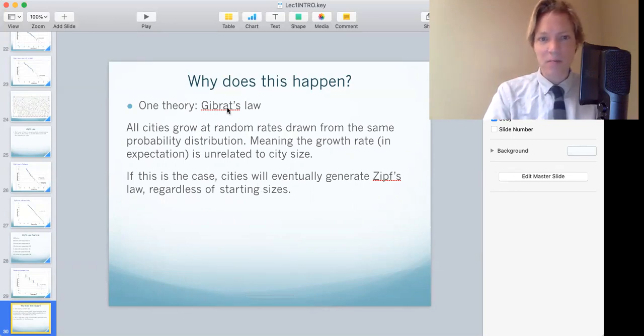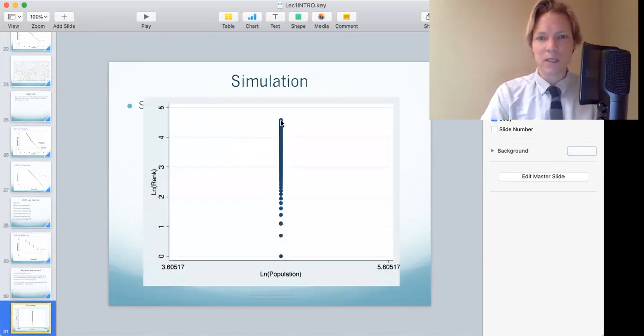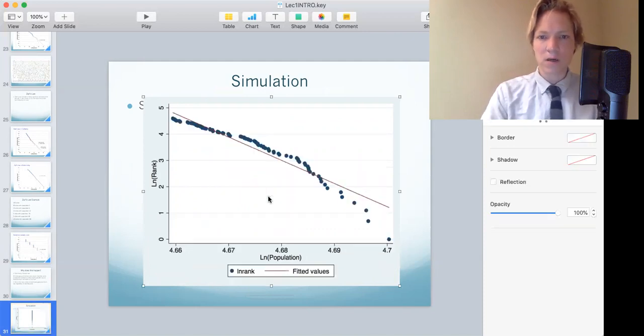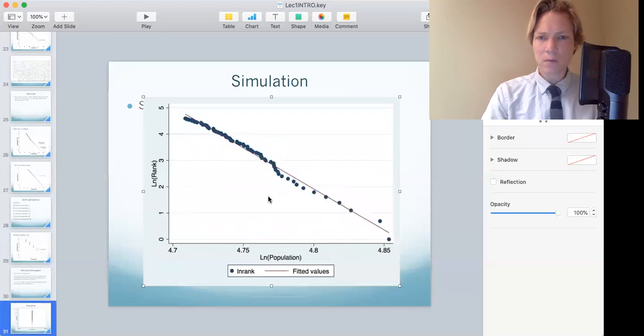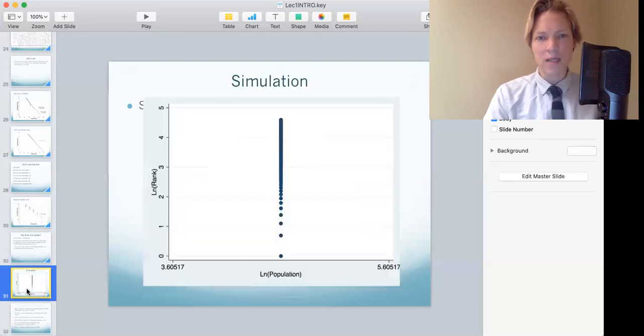One theory is that it's called Gibrat's law. And that is if cities grow at random rates pulled from the same distribution, you're basically going to get one city that has a bunch of lucky draws and that's going to be your big city, some other cities that kind of get some lucky draws. And so if you do that, this is a simulation starting all cities at the same population. If you do that and just assign them random draws of growth rates from the same distribution, push, push, play here, you will eventually arrive at Zipf's law. All right. But again, this is just a bit of a mystery, a bit of a mystery that nobody knows why it's like that.